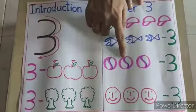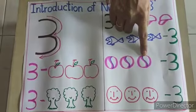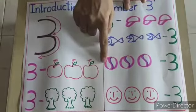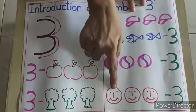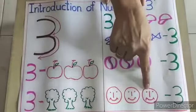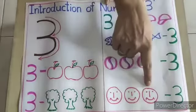1, 2, 3. So 3 balls. Again we have to write number 3 in front of 3 balls. Here there are smileys. Let us count them. 1, 2 and 3. 3 smileys. So we have to write number 3 in front of 3 objects.